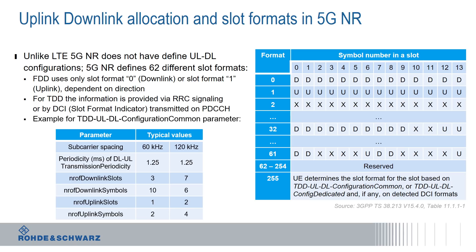Those are typical values we can assume — for instance, for the two subcarrier spacings of 60 kHz and 120 kHz. For the remainder of this video, we'll focus on the 120 kHz case, as this is the subcarrier spacing mainly used for FR2, the millimeter wave frequency range. For 120 kHz, we have a periodicity of 1.25 milliseconds, with about seven downlink slots, two uplink slots, six downlink symbols, and four uplink symbols.